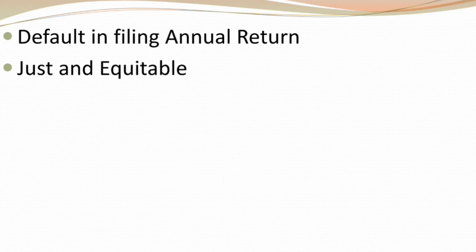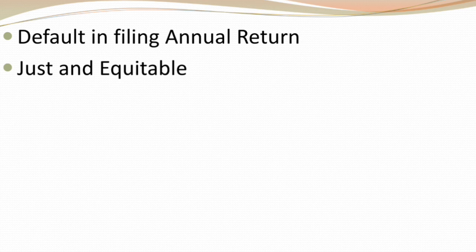To revise these four points under Section 271(1): first, company resolution; second, acting against national interest such as fraud or unlawful activity; third, involvement in unlawful activities found by the tribunal; and fourth, failure to file returns for five consecutive years. If any of these apply, the tribunal will order the company to close. These are the points related to winding up by the tribunal.